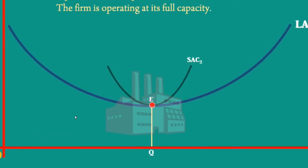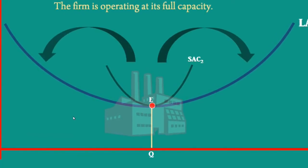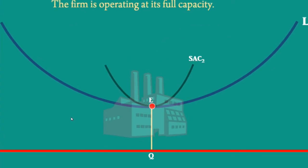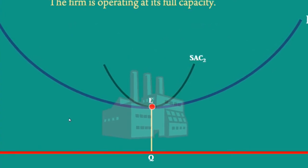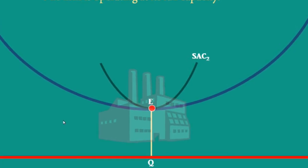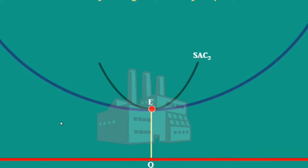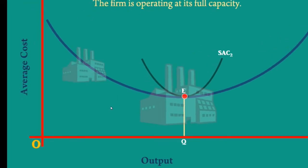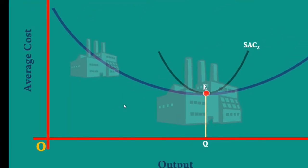By comparing a plant, one on its left and another on its right, we shall re-establish the concept of optimum firm. Look at the plant on the left side first. SAC1 is its plant curve.